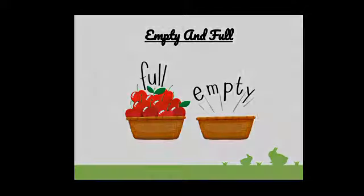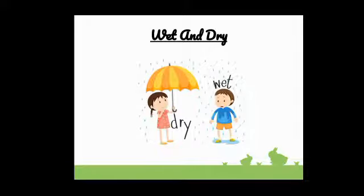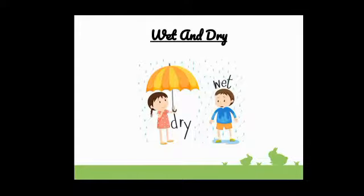Now I will show the next picture. Wet and dry. You can see in this picture there is raining, and the girl is under the umbrella so she is dry. And the poor boy doesn't have an umbrella, so he is wet. Opposite of wet is dry — the girl is dry and the boy who doesn't have an umbrella is wet.